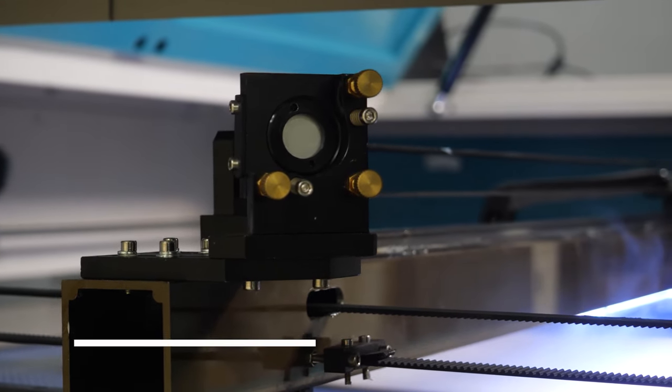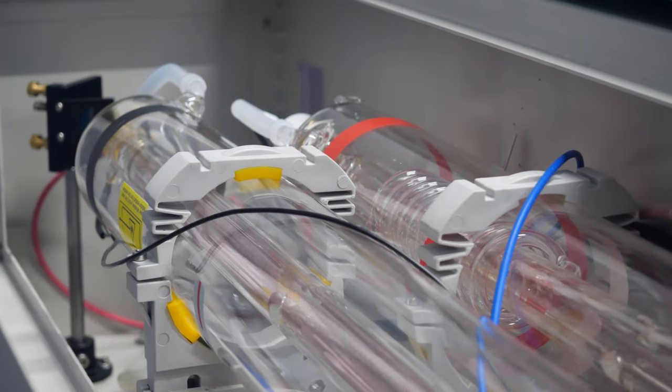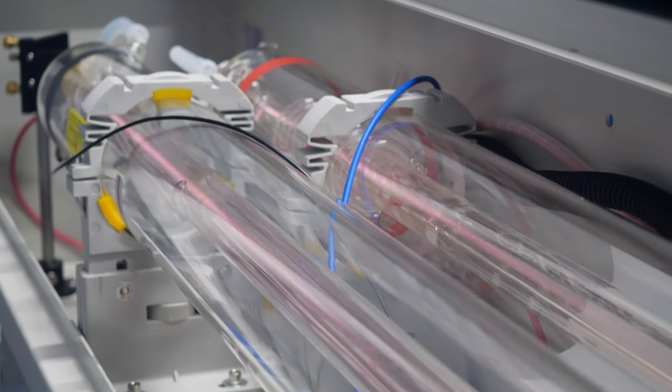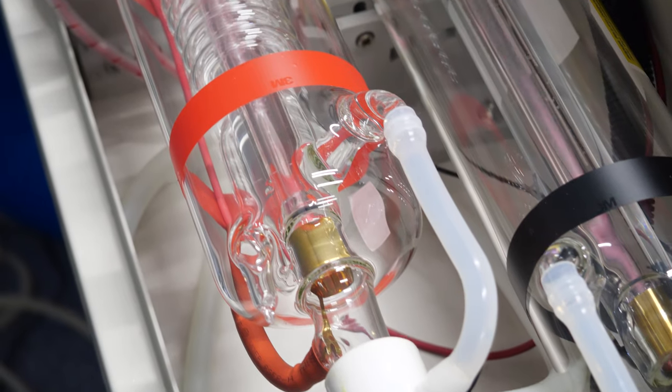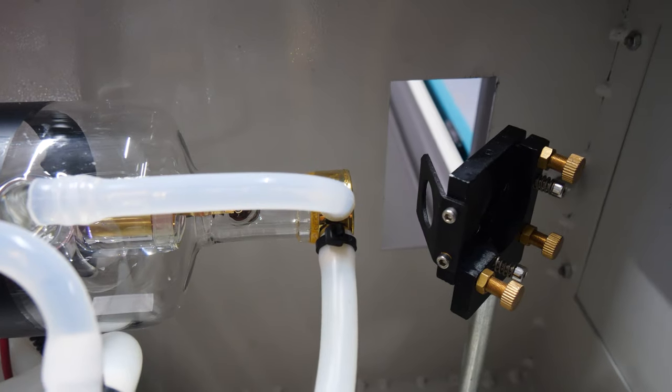The RUIDA RDC6445G control system provides autonomous operation of the machine according to a set program. Files can be imported via Wi-Fi, LAN, or USB. The machine controller has a built-in memory and is capable of saving files from a USB stick.